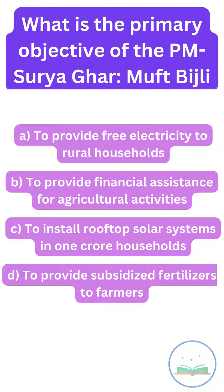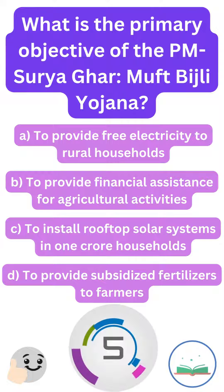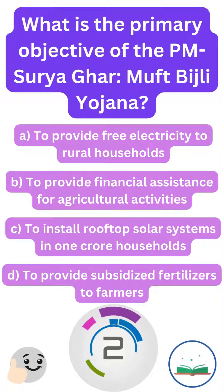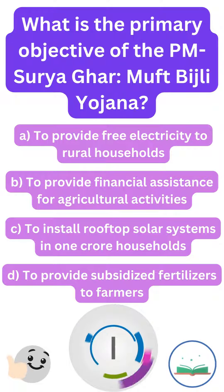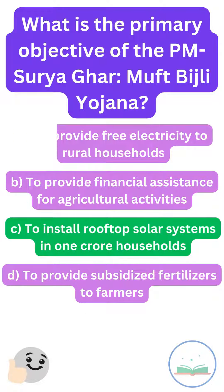What is the primary objective of the PM Suryaghar Muft Bijli Yojana? To install rooftop solar systems in 1 crore households.